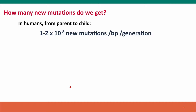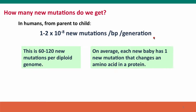How many new mutations do we get? We said 1 to 2 times 10 to the minus 8th per base pair per generation. What does that mean practically? We don't think in terms of base pairs — that's about somewhere around 100 new mutations per diploid genome. That means that on average each new baby has approximately one — sometimes none, sometimes one, sometimes two — new mutations that were not present in their parents that change an amino acid in a protein.